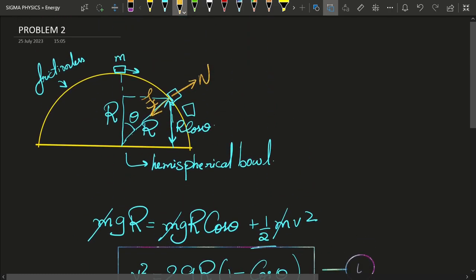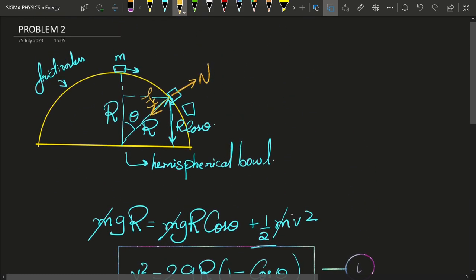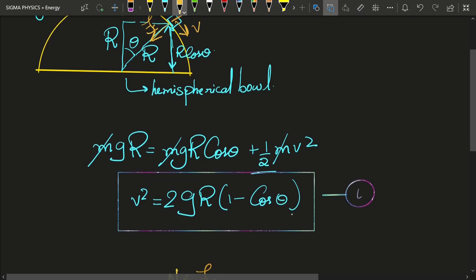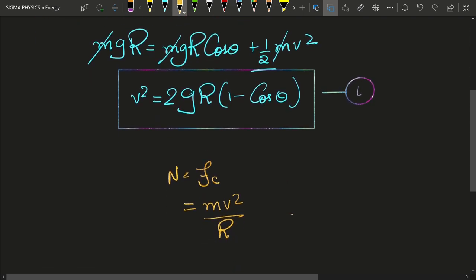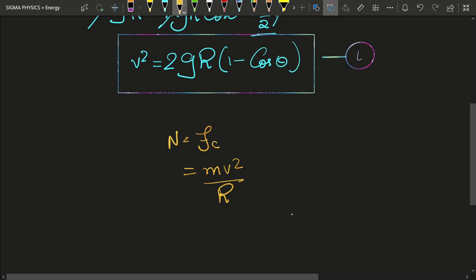And what is going to be fc? fc is nothing but mv squared divided by r. If the velocity of this block at the point when it is going to lose contact, if I say that its speed at that point is v, then we will get the centripetal force is mv squared upon r. We know that from our knowledge of circular motion. And what is going to be the normal reaction? The block is going to experience a force of gravity mg in the downward direction. And if this angle is theta, then this angle is also theta. So it is going to experience mg sin theta in this direction and mg cos theta in this direction. And hence, n is going to be equal to mg cos theta.